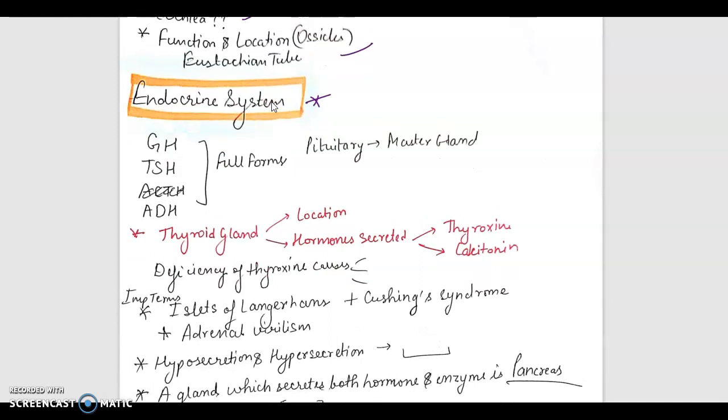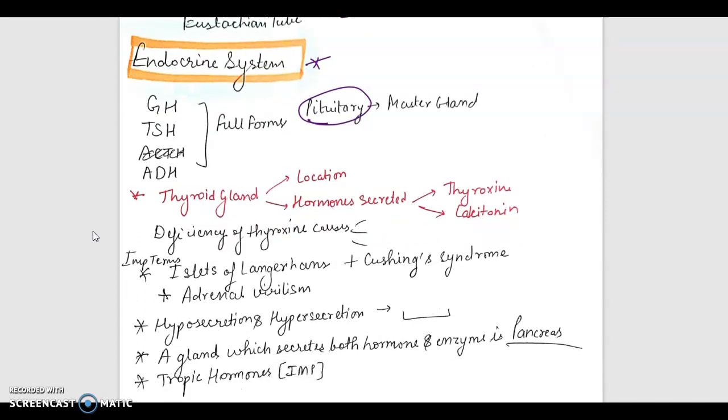A very interesting chapter, endocrine system. All the full forms of GH, TSH, ADH must be learned. Like GH is the growth hormone. And you'll have to answer the questions like oversecretion of GH or undersecretion of GH - which disease is there? Like for undersecretion of growth hormone, dwarfism. And oversecretion, it is gigantism.